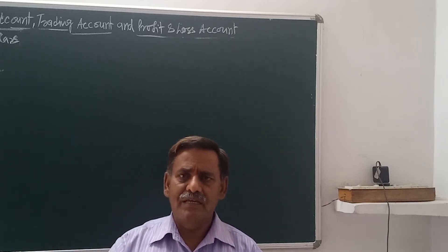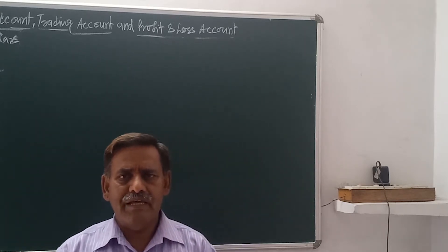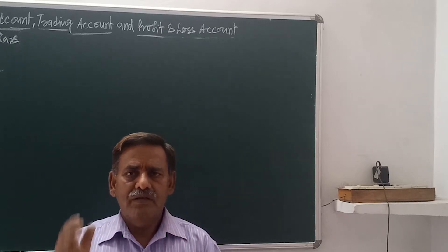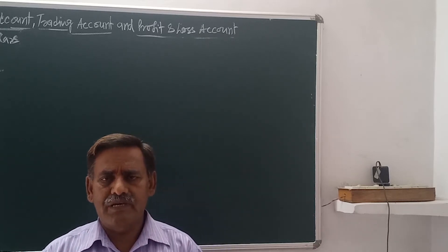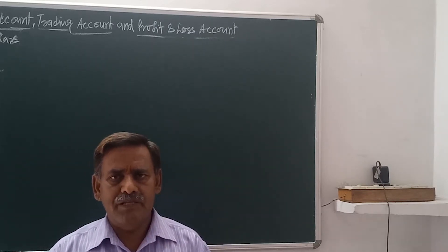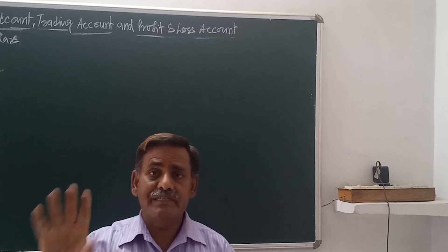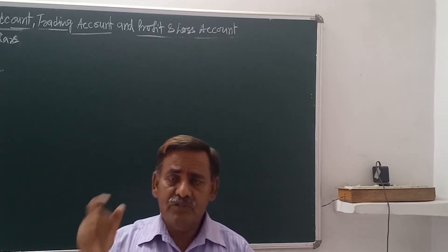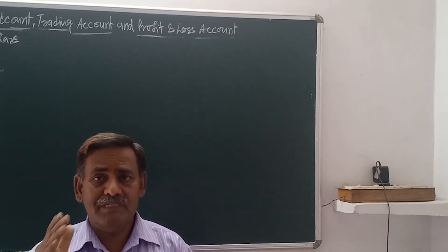From the trading account, we get to know the gross profit. And finally, to know the net profit — that is profit after all expenses and incomes — the profit and loss account is prepared. The most important thing is that every producer needs to know what cost was incurred in manufacturing their goods — the cost of production. So all manufacturing-related items that we used to show in the trading account in the case of trading activities, we will now bring them into the manufacturing account.